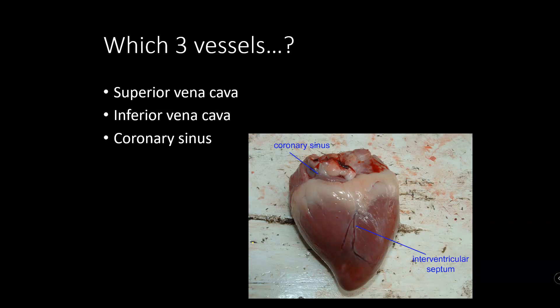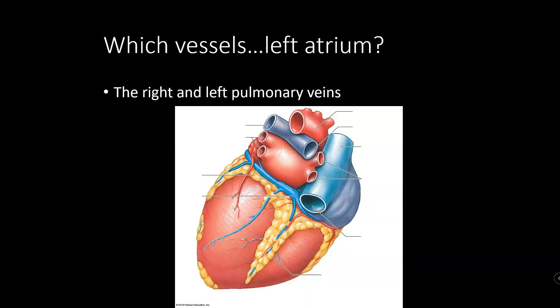Which three vessels empty into the right atrium? You've got the superior and inferior vena cava — the biggest and easiest to see, and the two that everybody usually remembers. There is also a smaller vessel coming in from the posterior aspect of the heart called the coronary sinus. It's this sort of big, swollen, veiny-looking thing — that's what a sinus actually is — and it also drains blood into the right atrium.